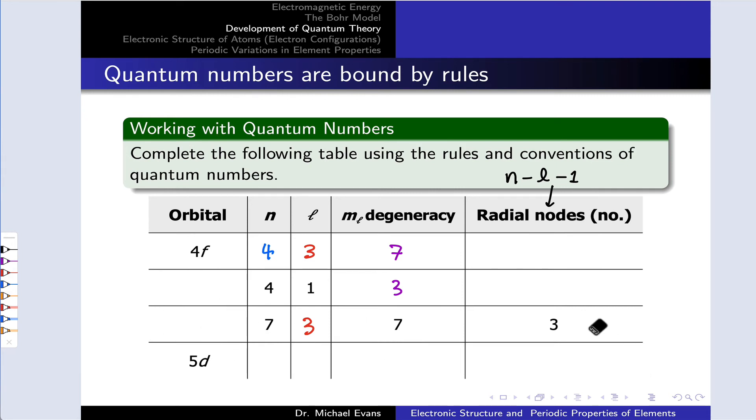This could also be inferred from the number of radial nodes. Since 7 minus 3 minus 1 equals 3, that number of radial nodes tells us that the L value must be 3 in conjunction with the n value equal to 7.